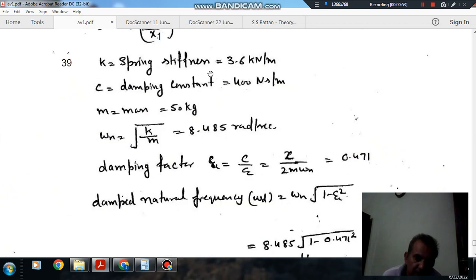So here the spring stiffness is 3.6 kN/m or 3600 N/m. The damping coefficient is 400 Ns/m and mass is 50 kg.